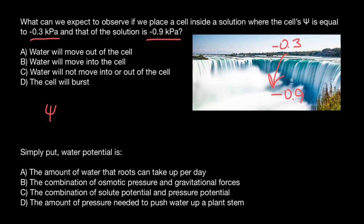Variant A: the amount of water that roots can take up per day. Variant B: the combination of osmotic pressure and gravitational forces. Variant C: the combination of solute potential and pressure potential. And variant D: the amount of pressure needed to push water up a plant stem.